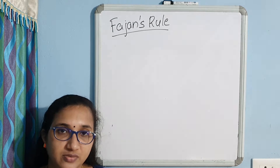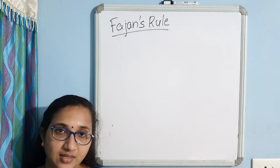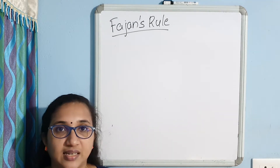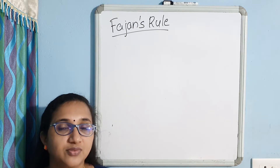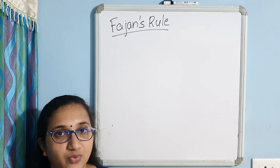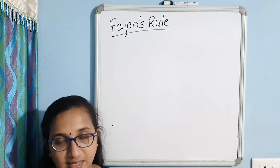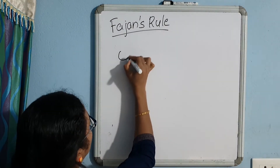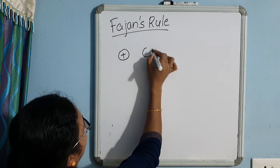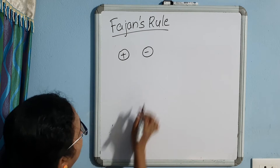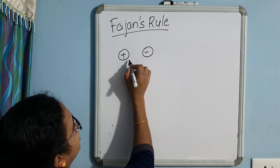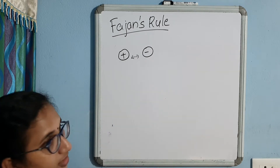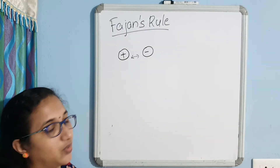An ionic bond is formed by the transfer of electrons between the combining atoms, and as a result of this transfer, two ions will be formed — one cation and one anion, a positive ion and a negative ion. These are held together by strong electrostatic attraction, and that is called ionic bonding.